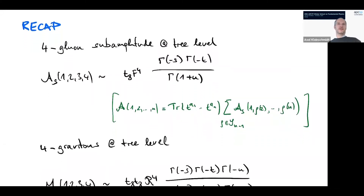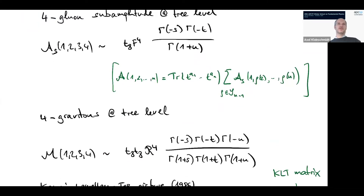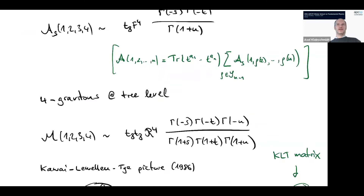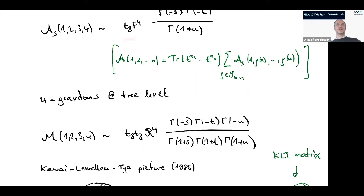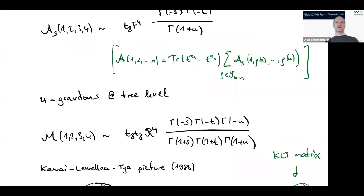We also computed the four-point amplitude for the closed superstring, where the massless states are gravitons. The formula contained the kinematic part R to the fourth — where R stands for the Riemann tensor — contracted with the tensor T8, which also appears for the open string. The remaining integral again led to a quotient of gamma functions. These were the results obtained from the explicit amplitude calculation last time.